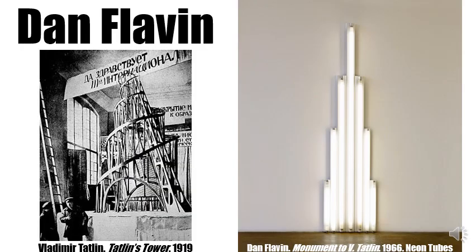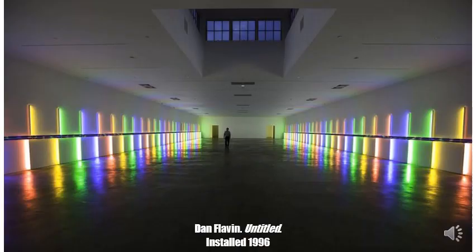Dan Flavin is another minimalist who experimented with new materials, specifically neon tubes. Often installed in groups, his sculptures call attention to the shape and size of the room itself. As many minimalists were, Flavin was interested in Russian Constructivism, and in this piece pays tribute to Vladimir Tatlin's interest in non-sculptural materials and sculpture's relationship to architecture and the everyday world. Furthermore, this piece continues the minimalist interest in grounding a work to the floor, even when hung on the wall, and in this way directly engaging with the viewer's space. Here is another more colorful example of Dan Flavin's exploration of light, space, and architecture in the Menil Collection in Houston, Texas.